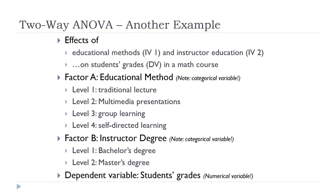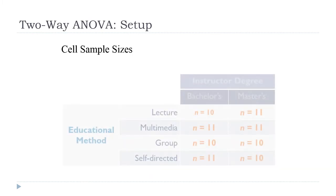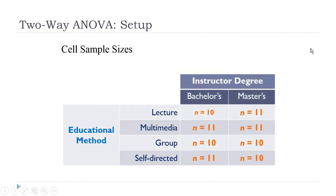The dependent variable is going to be the student's grades in the course — that's our numerical dependent response outcome variable. One way to look at a design for a two-way ANOVA is to draw a two-way table, but we often put something in those cells that's a little bit different from a chi-square. Here it is kind of like a chi-square, because we're just putting the sample sizes in each cell, and this is how we can look and see if there are more or less balanced sample sizes.